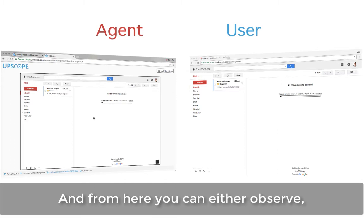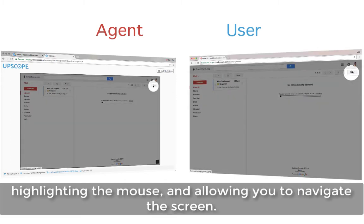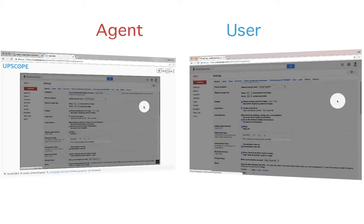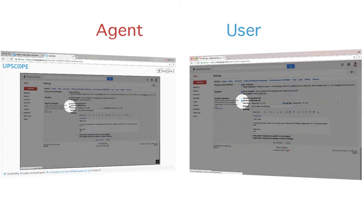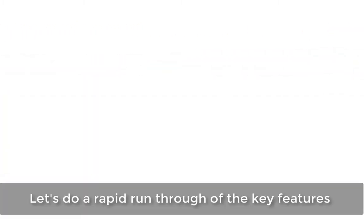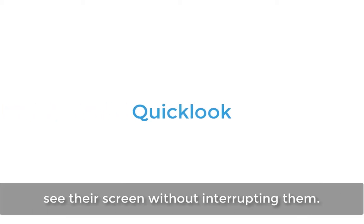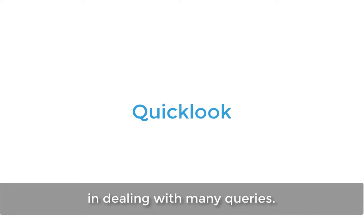And from here, you can either observe or click and take control, highlighting the mouse and allowing you to navigate the screen. Let's do a rapid run-through of the key features. For quick check problem solving, you'll be able to see their screen without interrupting them. It's anonymous, and often that's all it takes for dealing with many queries.